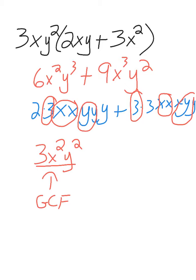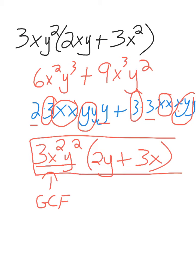And then on the inside, what's left is here I have 2y, plus here I have 3 and 1x. And this is my factored form.